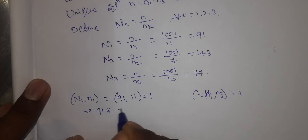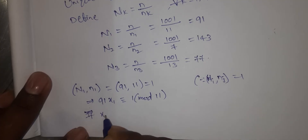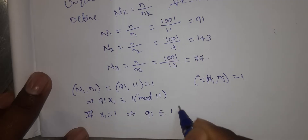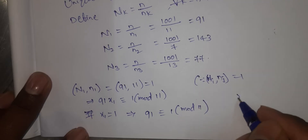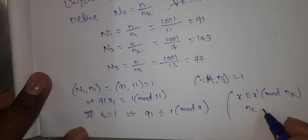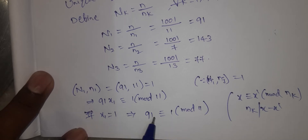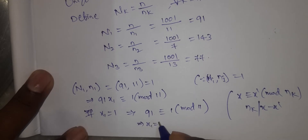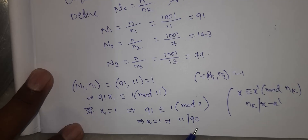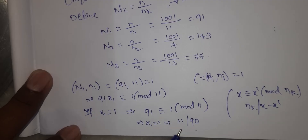That implies 91·x1 ≡ 1 mod 11. If x1 = 1, substitute: 91·1 mod 11. Testing values: if x1 = 1, then 11 divides 90? No. If x1 = 2, then 11 divides 181? No. If x1 = 3, then 11 divides 272? No. If x1 = 4, then 11 divides 363: 363/11 = 33, remainder 0. Yes!